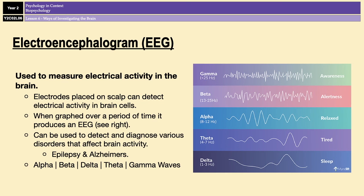There are five basic EEG patterns — you can see them on the right of the screen: alpha, beta, delta, theta, and gamma waves. You don't really need to know too much about them for A-level psychology, but we do come across them again in lesson 8 when we look at ultradian rhythms. For now, just be aware that they exist and that each EEG pattern indicates a different level of activity in the brain.